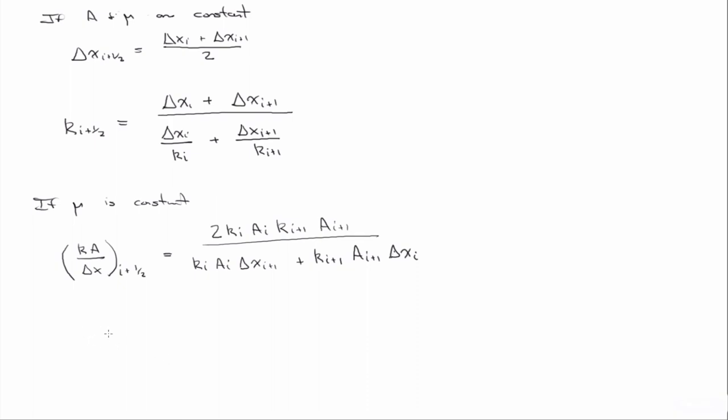And then, in this case, we'd have t to the i plus a half is equal to one over b alpha mu times kA delta x i plus a half. So that would be the interblock transmissibility for the case where all three, k, a, and delta x were heterogeneous.